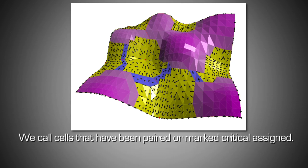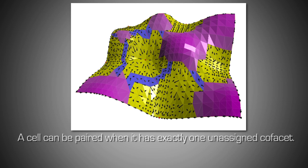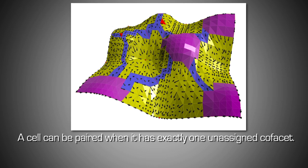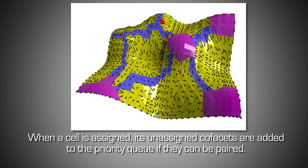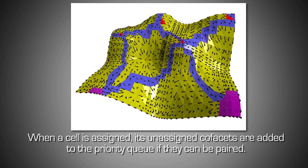We call cells that have been paired or marked critical, assigned. A cell can be paired when it has exactly one unassigned cofacet. When a cell is assigned, its unassigned cofacets are added to the priority queue if they can be paired.